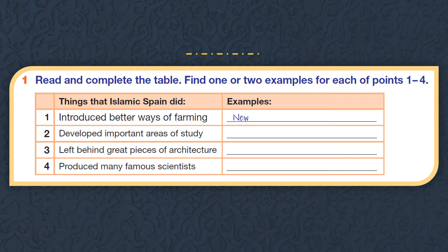Read and complete the table. Find one or two examples for each point from one to four — things that Islam expanded and some examples. Number one: introduce better ways of farming. We answered a question like this before in a listening activity. The example is new crops like lemon and so on. Pause the video, try to do the task, go back to the passage, and then check your answers.